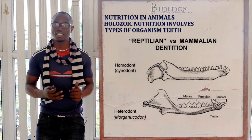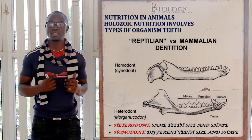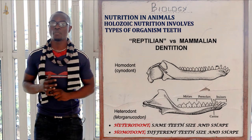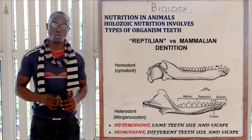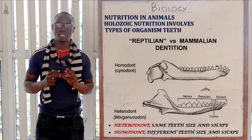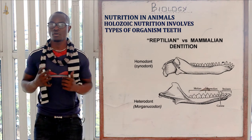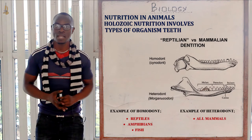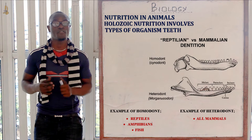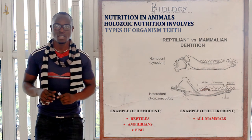Organisms that are heterodonts have teeth of different sizes and different shapes. The opposite of heterodonts are homodonts, whereby the size and shape of the teeth is exactly the same. Examples of homodonts include reptiles, amphibians, and fish, where the teeth are exactly the same size and shape.